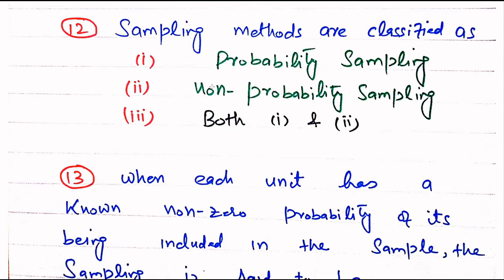Question number 12. Sampling methods are classified as — Probability sampling, Non-probability sampling, or Both 1 and 2. The right choice is Both 1 and 2. Sampling methods are classified into probability sampling as well as non-probability sampling.